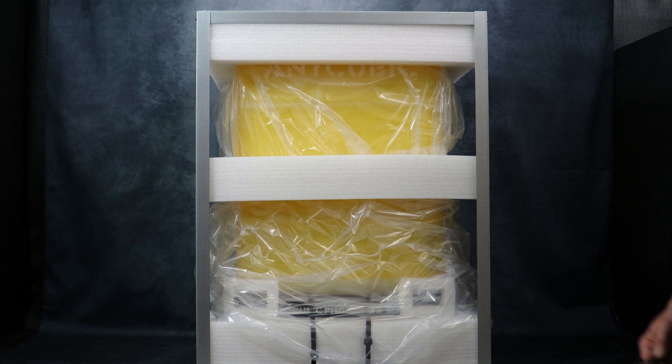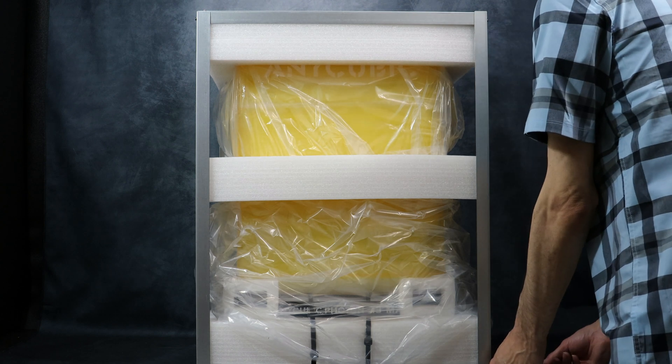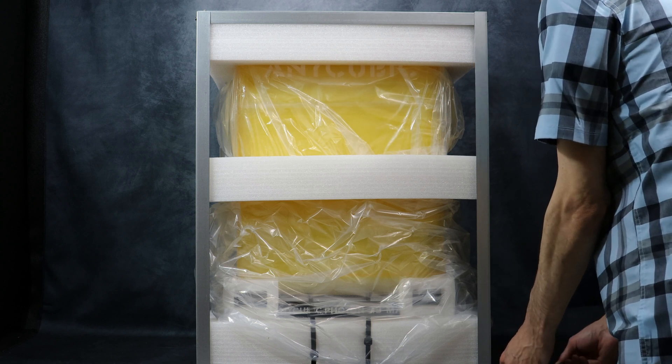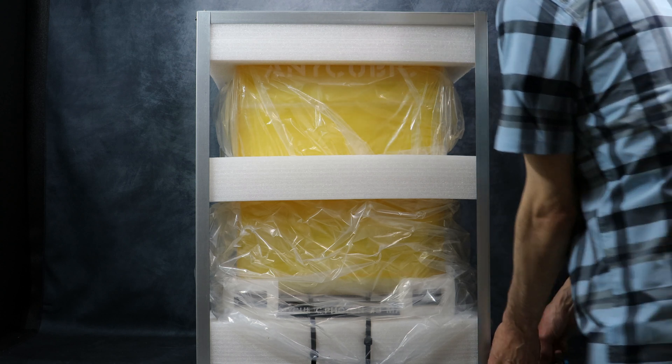The first thing you're going to notice once you get out of the box is that this thing comes shipped with an aluminum frame. You're going to have to remove the 8 screws and then remove the frame before you can remove the foam and get the printer out.